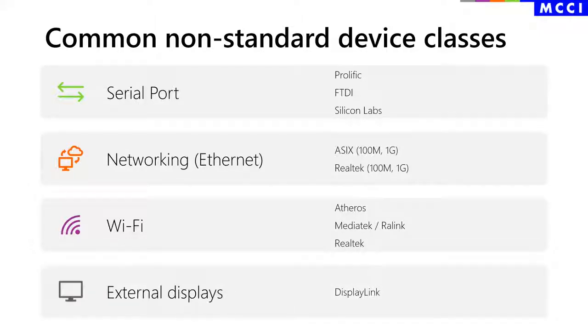USB display adapters are generally proprietary because the AV class spec was not successful in the market. DisplayLink is the key vendor in this area. There are a lot of device classes — this is good. The wealth of device classes is what has made USB universal and ubiquitous, but it's a challenge for system designers. It's an embarrassment of riches.